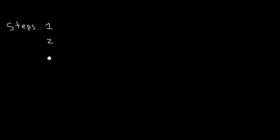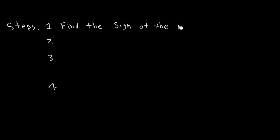Here are some steps that I highly recommend using when adding integers. These steps will not only help us solve problems, but are also important for avoiding silly mistakes. The first step when adding integers is to find the sign of the answer first. This sign can either be positive or negative. The next step is: if we are adding two negatives, our answer will always be negative.